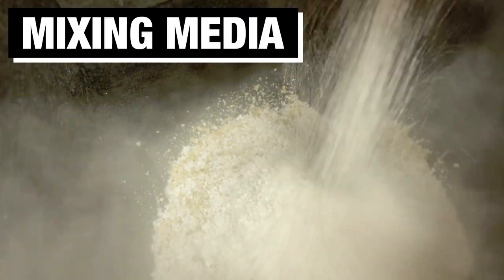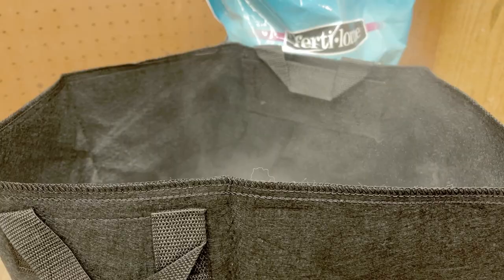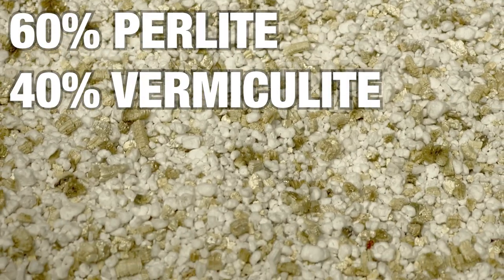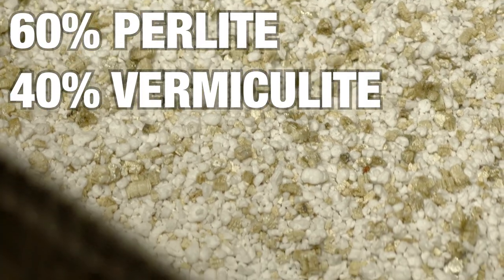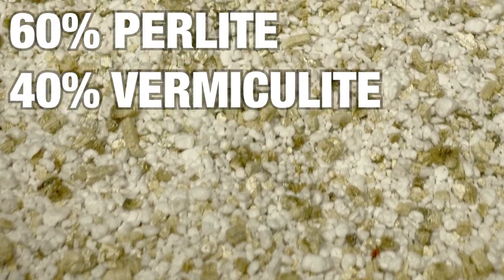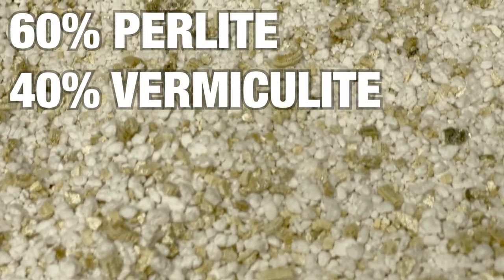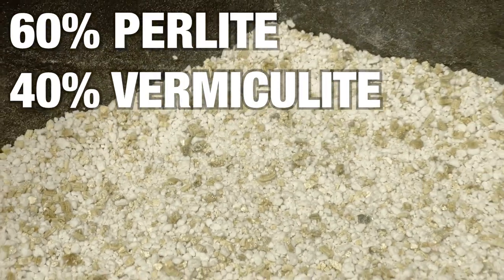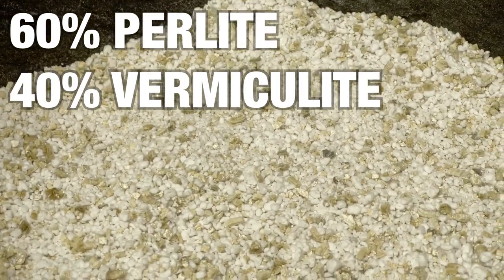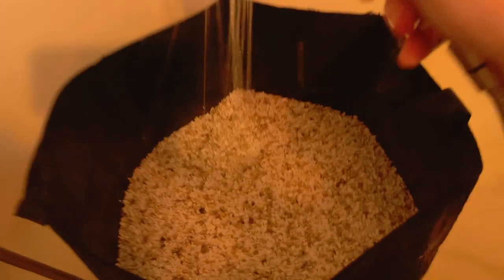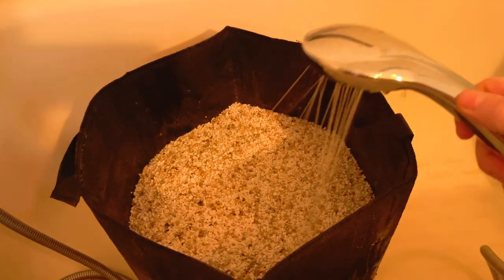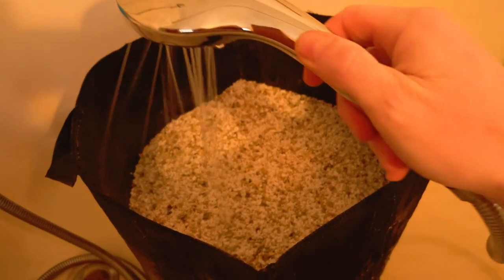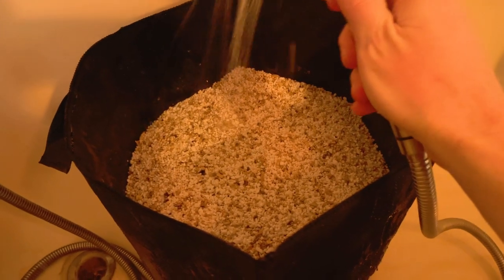Perlite and vermiculite dust is bad for your lungs so it's a good idea to wear some kind of a dust mask. Here I'm making a 60-40 mix of perlite vermiculite: 60% perlite, 40% vermiculite. Vermiculite has much better water holding capabilities than perlite and I don't want the wick system to be over saturated with water. Now that the mix is ready I'm going to rinse it out really well to get rid of the dust and pre-soak the vermiculite.